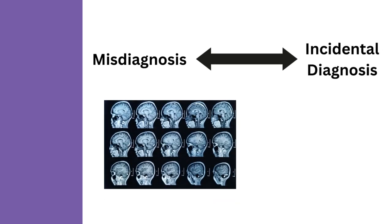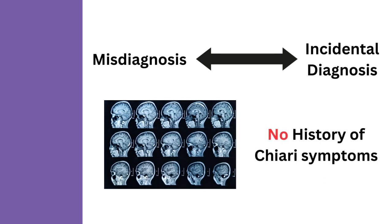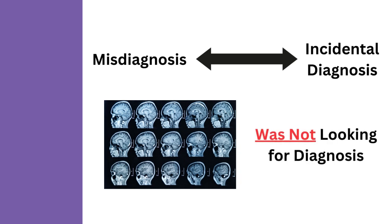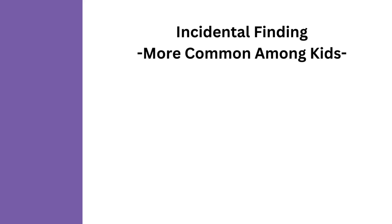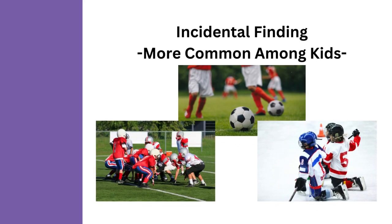At the other end of the spectrum are incidental diagnoses. This is when imaging is ordered for some other reason, such as after a head injury and a herniation is found, but the person does not have a history of Chiari-type symptoms and was not looking for a diagnosis of any kind. This type of incidental finding is more common among kids who may be routinely imaged after a sports-related head injury.